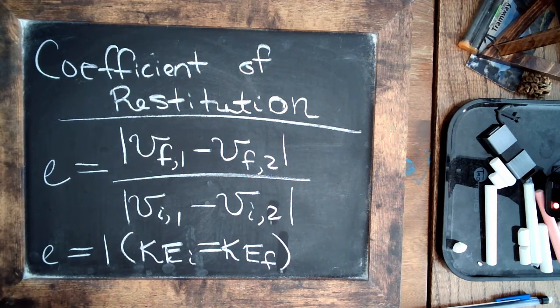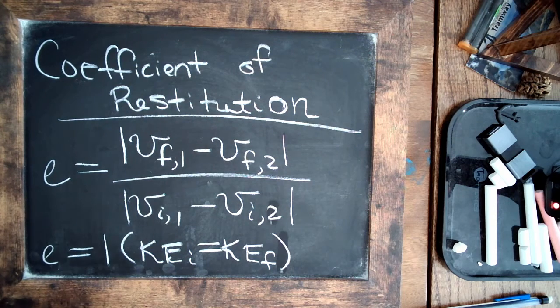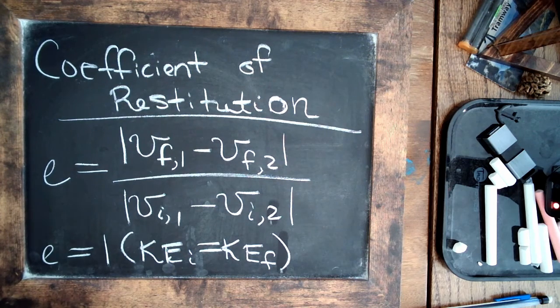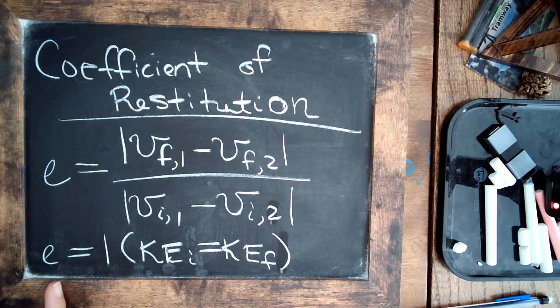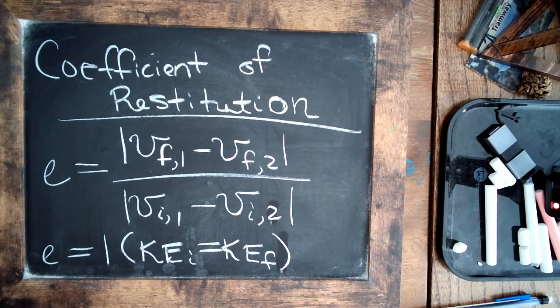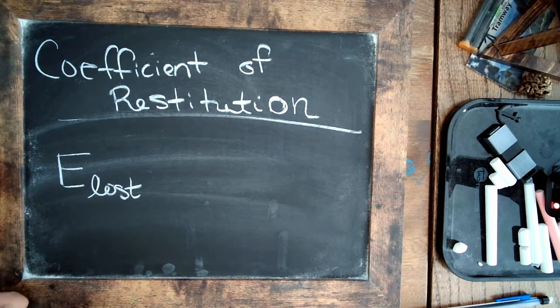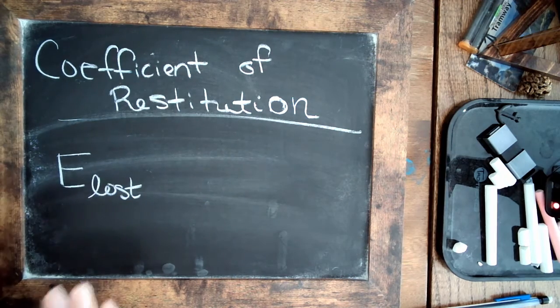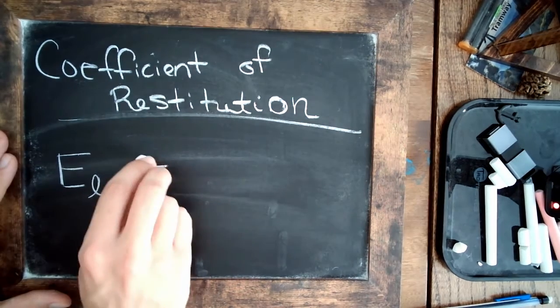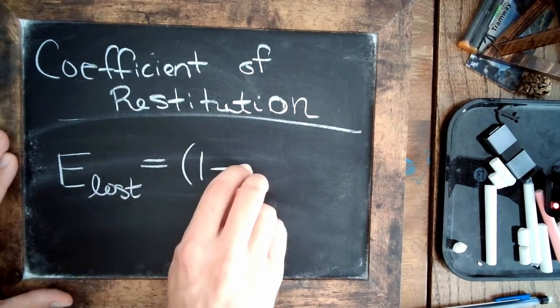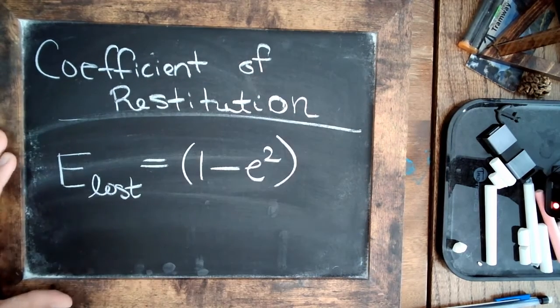But in fact, in our case, due to the deformation, we have a certain amount of energy being lost, and so this e, the coefficient, ends up being less than one. And if you run the numbers, you can find out that the energy lost in the collision, due to the deformation, is one minus this coefficient